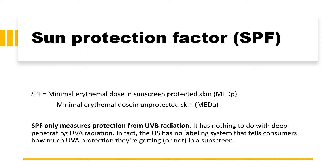Let us try to understand the formulation of sunscreen. Why do we use sunscreen? Because we want to protect our skin from harmful radiations of the sun — the UVA region and UVB region. UVA is basically concerned with the photoaging effect and carcinogenic effect, whereas the UVB region is responsible for causing sunburn. The UVB radiation protection is provided by the sun protection factor calculated in the sunscreen.